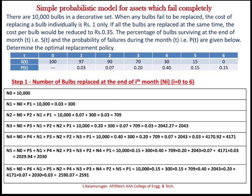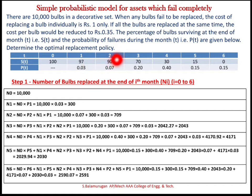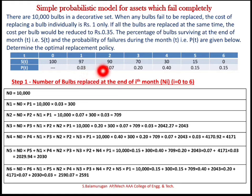We need to determine the optimum replacement policy. Since we don't know when the electronic equipment will fail, we use probability theory. T represents months; at T=0 we install 10,000 bulbs. At the end of month 1, survival probability is 97%; at end of month 2 it is 90%. P(t) is found from survival probabilities: P(1) = (100−97)/100 = 0.03; P(2) = (97−90)/100 = 0.07, and so on.